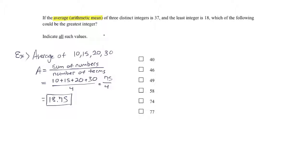Which of the following could be the greatest integer? What if I said 18 plus another number, let's say M, plus another number, let's say L, divided by 3. The number of terms there are should be equal to 37 if this is the formula for calculating the average.